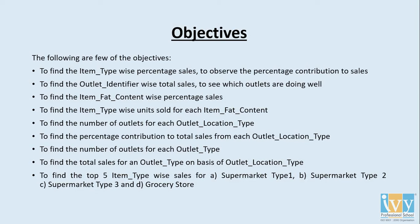Following are a few objectives that have been enlisted: item-wise percentage sales, the outlets that are doing well, analysis on the fat content, and the contribution to total sales for each outlet location type, to mention a few.